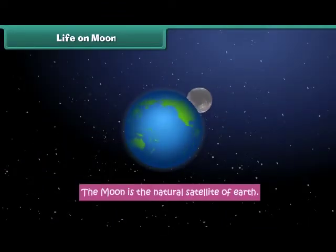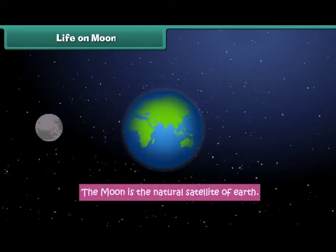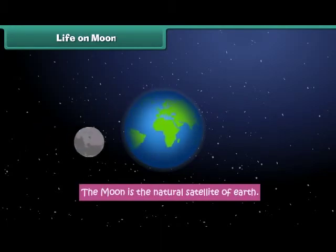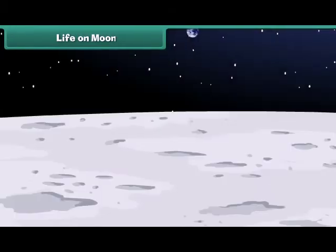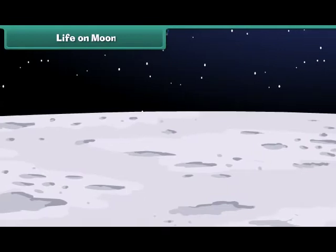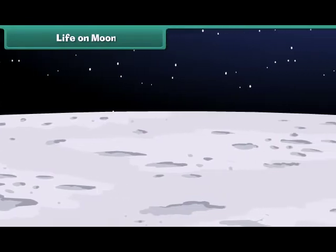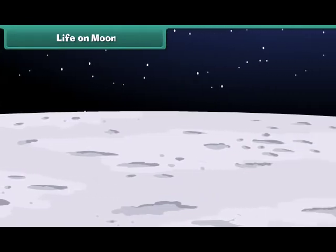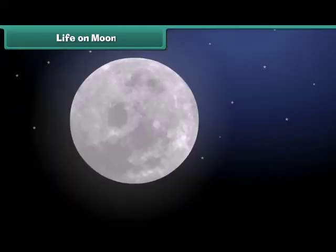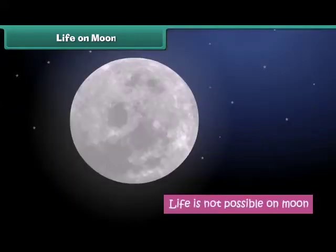Though the Moon is the natural satellite of Earth, it is very different from Earth. There is no air, water or food on the Moon. Therefore, life is not possible on it.